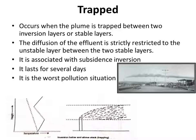The next type of plume behavior is trapped. It occurs when the plume is trapped between two inversion layers or stable layers. The diffusion of the effluent is strictly restricted to the unstable layer between the two stable layers. It is associated with subsidence inversion, lasts for several days, and is the worst pollution situation.